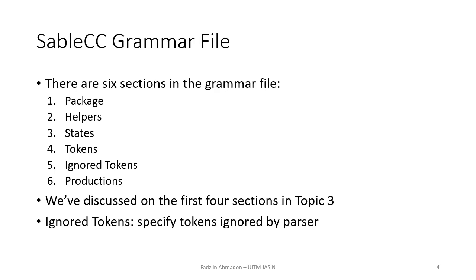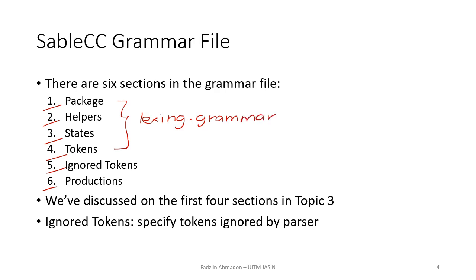There are six sections in a grammar file: package, helpers, states, tokens, ignored tokens, and productions. The first four we have discussed when we built our scanner using lexsync.grammar. We will discuss the last two: ignored tokens and productions.